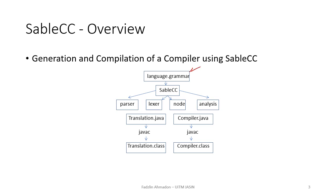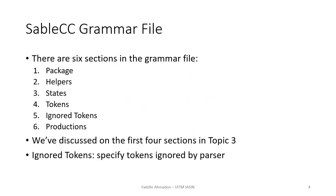For example, this is the grammar file that we must provide: language.grammar. Once we insert it into SableCC, SableCC will automatically produce a parser, a lexer, a node, and analysis — all in the form of .java files. We as users must also write a translation.java file and a compiler.java file. Finally, we compile all the .java files using the javac command and we will get all the files as .class. We will not go into detail on how SableCC works; the scope of our discussion is how bottom-up parser grammar can be included into the SableCC grammar file.